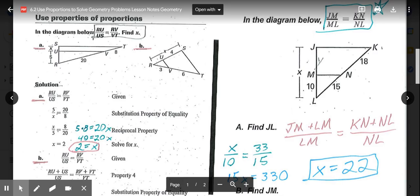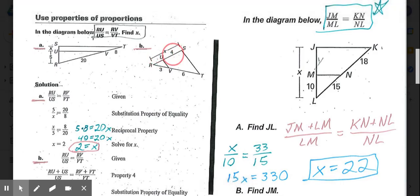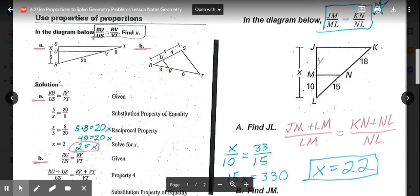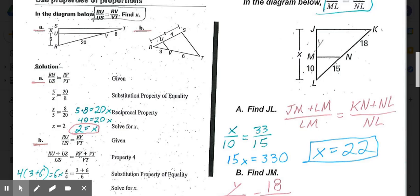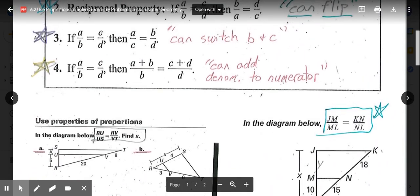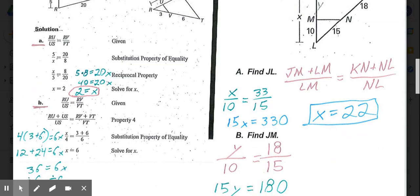For part B to find the value of X, X is this whole segment RS. We have US, which is 4, RV, which is 3, and VT, which is 6. So again, our given proportion was RU/US = RV/VT. Now in this one, we're going to use the fourth property in order to solve, meaning because X is this whole segment RS, we need to add RU to US to get that whole distance.